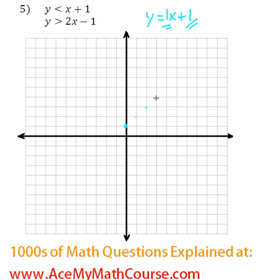So we go over 1, up 1. Let me just quickly draw the line. There we go. And of course, I will also draw the line y equals 2x minus 1.